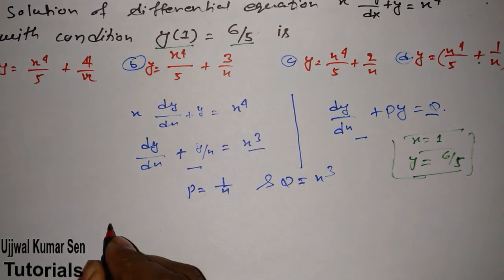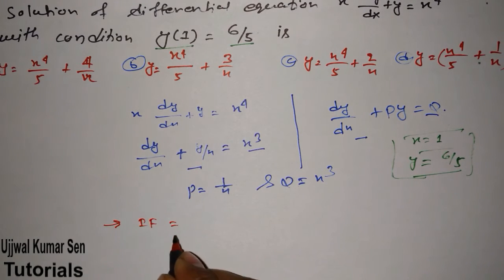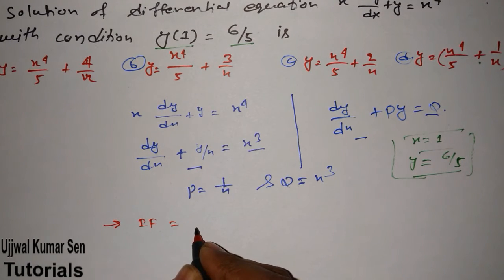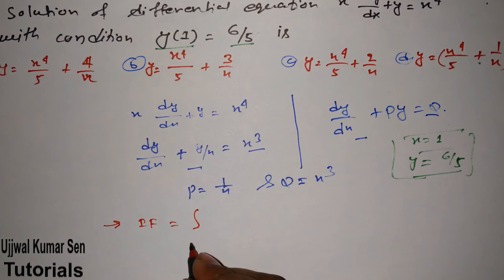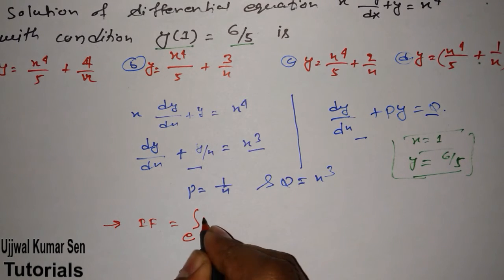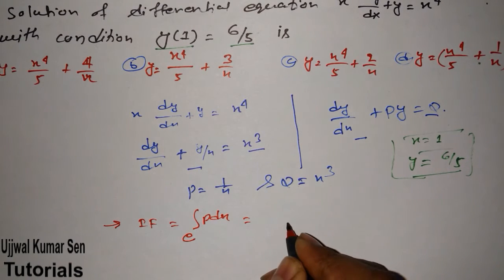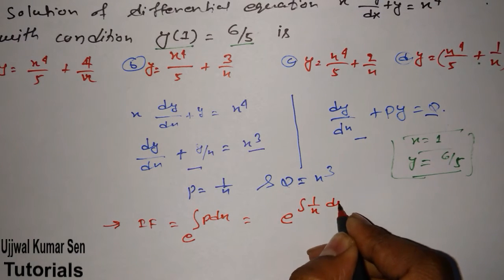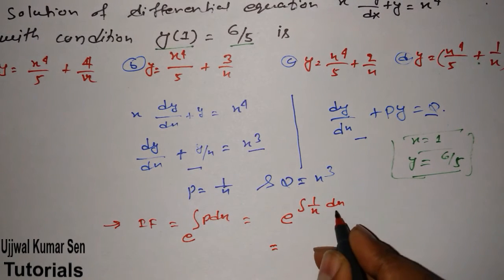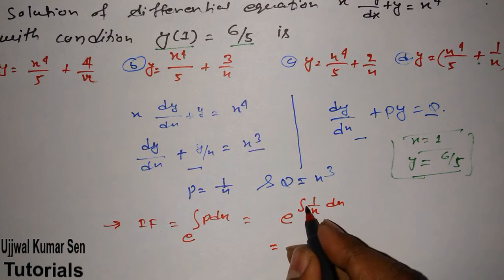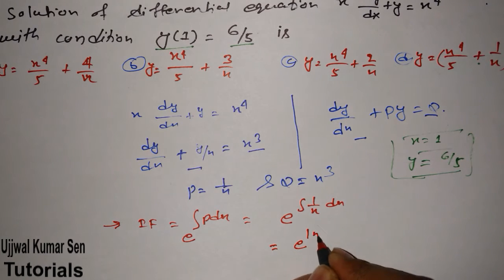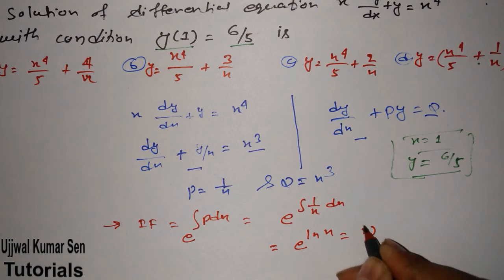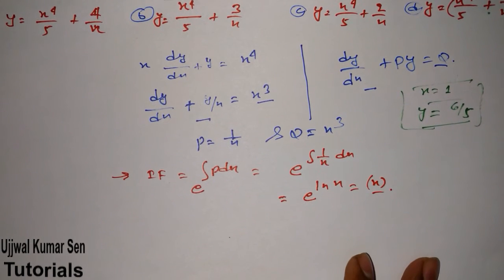The first step is to find the integrating factor. For that, we use the formula e to the power of integral P dx. So e to the power of integral (1/x) dx. The integral of 1/x is log x, which equals log base e of x, so the integrating factor is x.